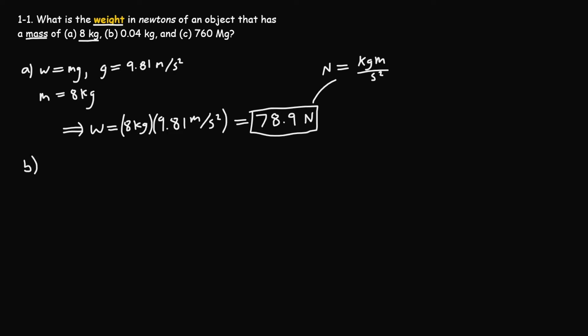Now moving on to part B. Since the mass is given in kilograms, we're going to use the exact same process. Here, m equals 0.04 kilograms, so the weight is equal to 0.04 kilograms times 9.81 meters per second squared, which equals 0.392 newtons.